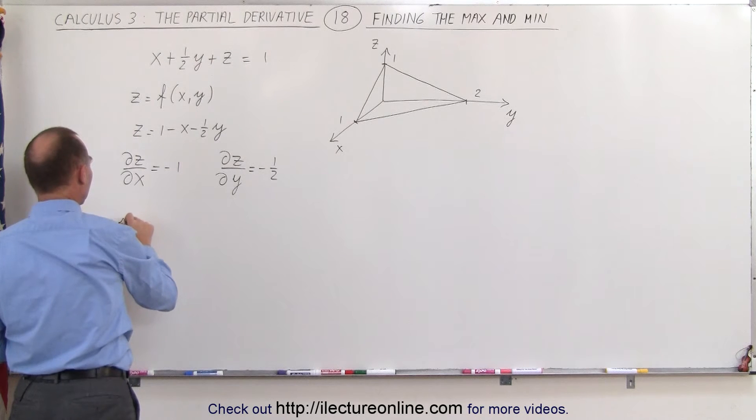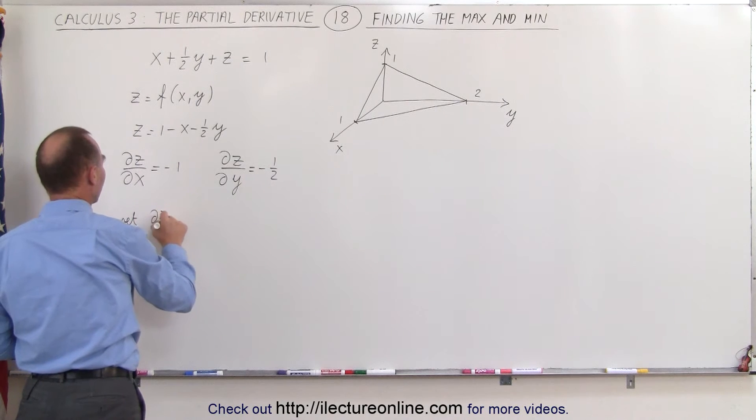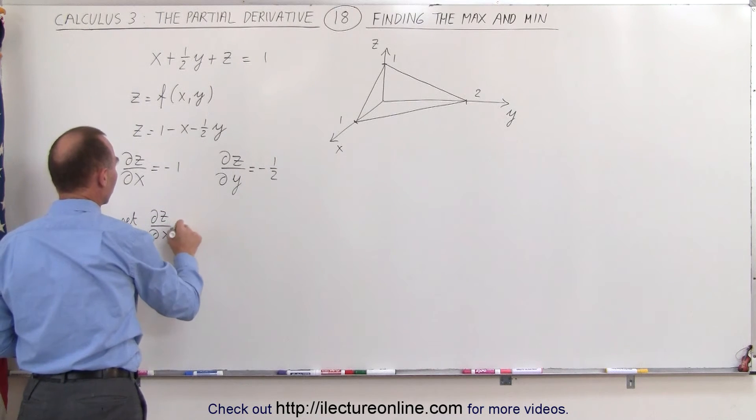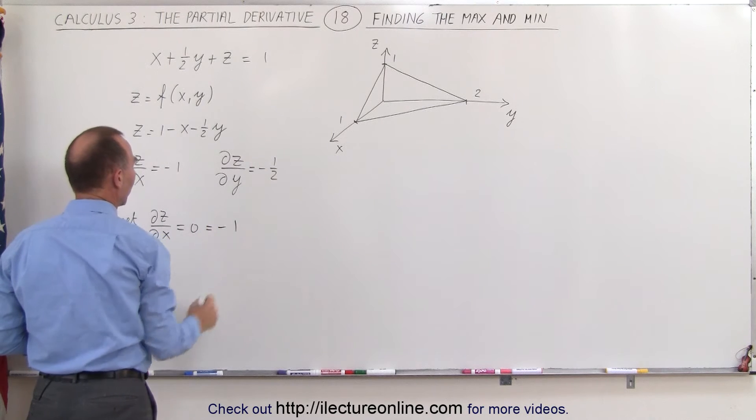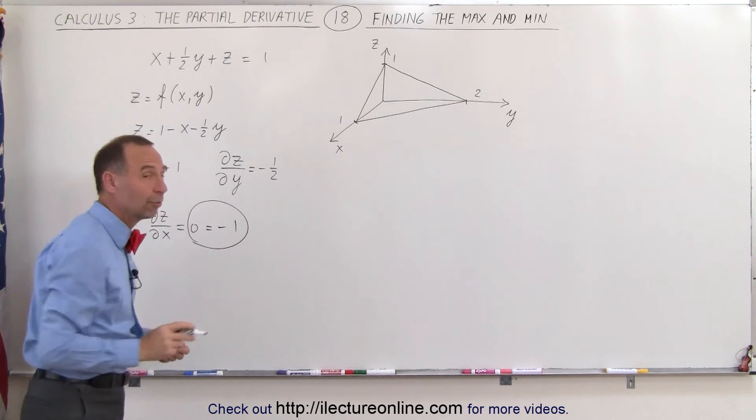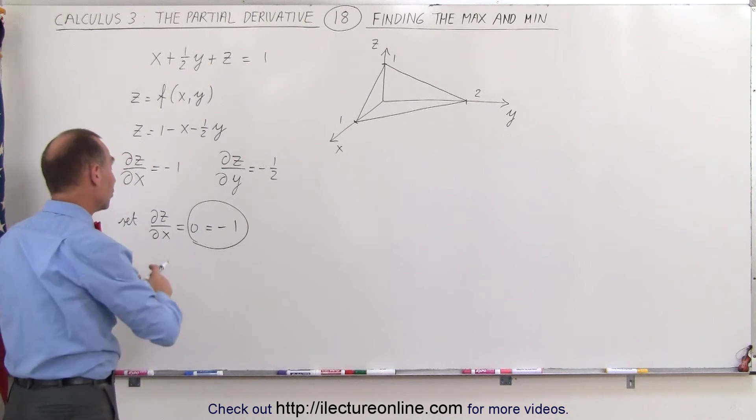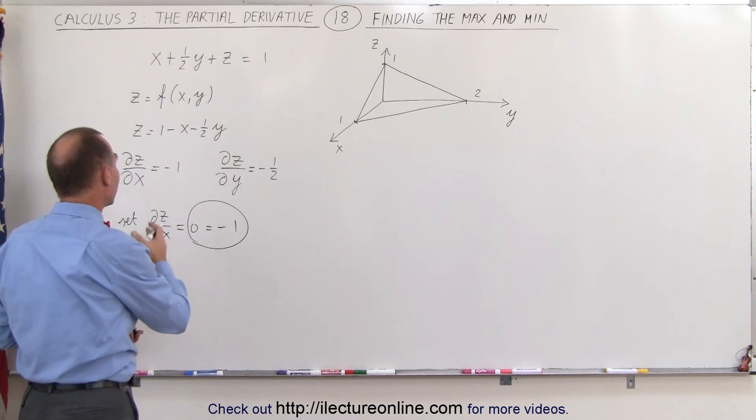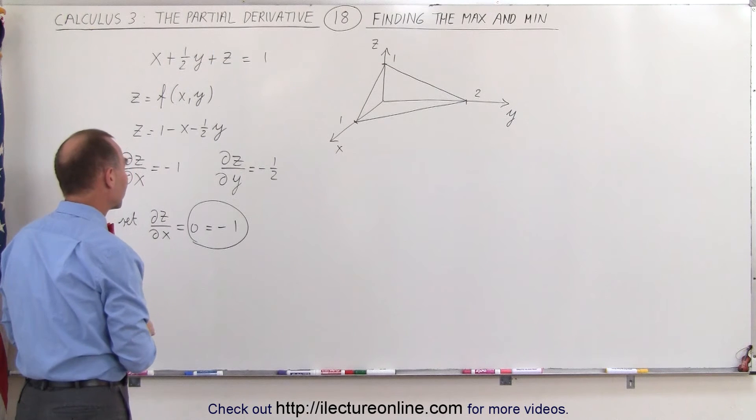Now we're going to set the partial of z with respect to x equal to 0, which is equal to negative 1. Of course, here we realize that 0 can never be equal to negative 1, which means there is no such point where we can set the partial z with respect to x equal to 0.